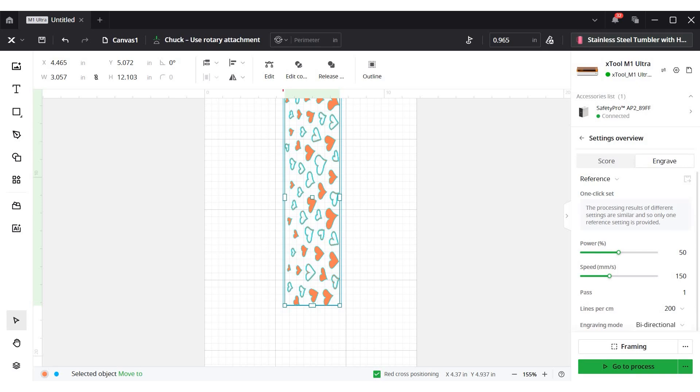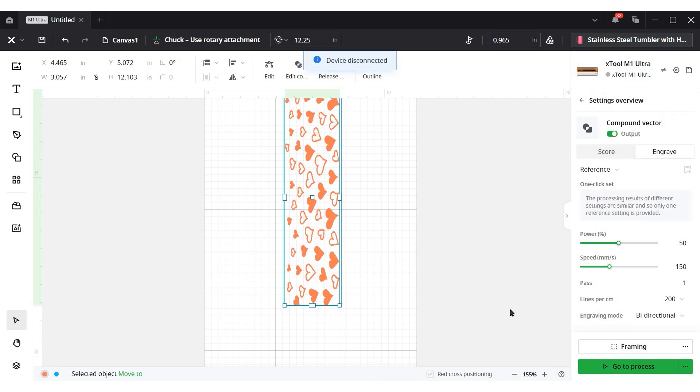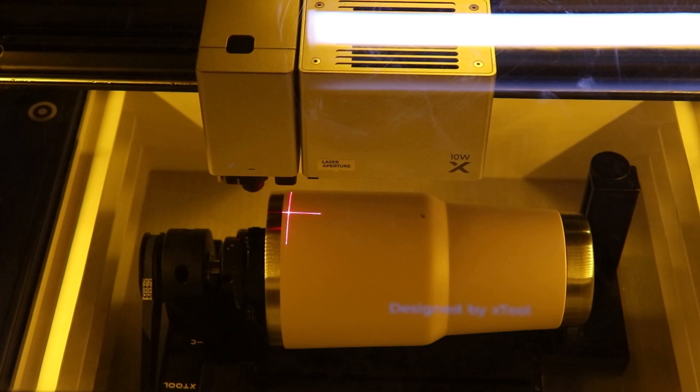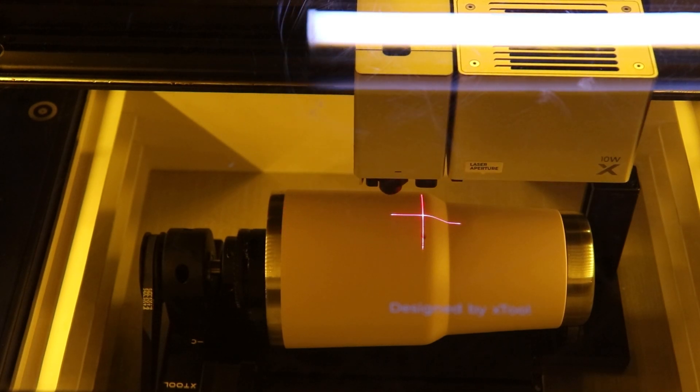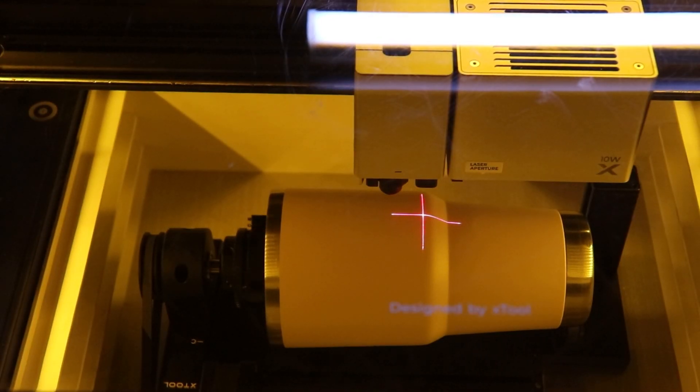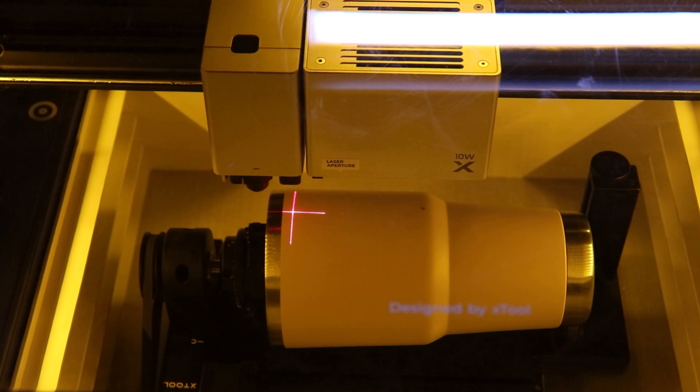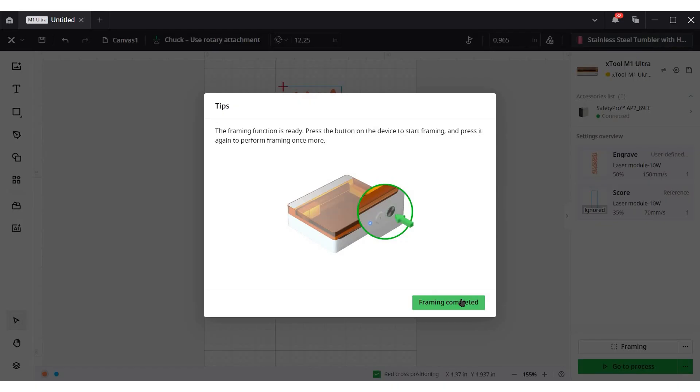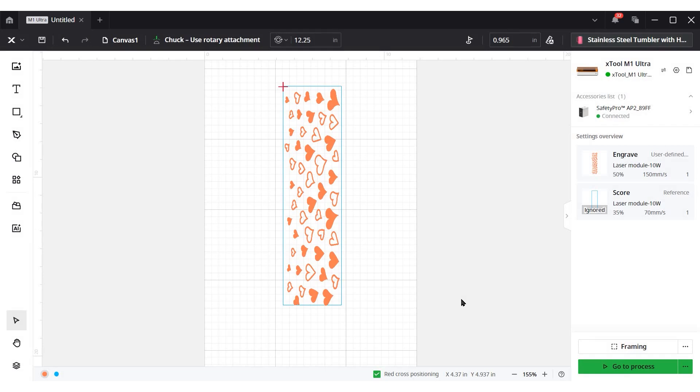The next thing we want to do is frame. And usually when I do a tumbler, I frame a couple of times because I really want to make sure that we are engraving exactly where we want to. So let's go ahead and hit frame. Okay, we have completed our framing. I've done it a couple of times. It looks like it's going to be placed exactly where I want it. So now I am ready to process.